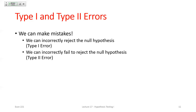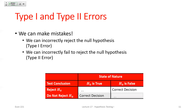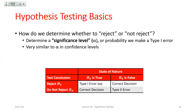When the null is actually true and we fail to reject it, that's a correct decision. When the null is false and we reject it, that's also correct. The errors are: Type I — rejected when we shouldn't have; Type II — failed to reject when we should have. The Type I error rate equals exactly alpha.